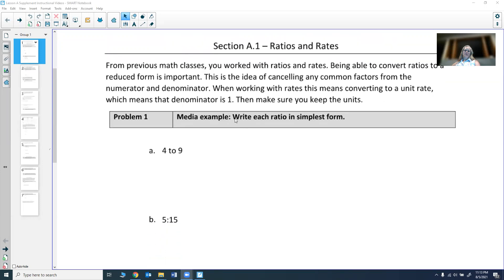As an example, let's just do one where we're trying to find each ratio in its simplest form. The first one we have is 4 to 9. Now that 'to' there really means fraction. It really means 4 over 9, so the fraction 4 ninths.